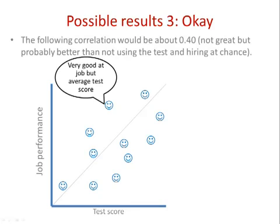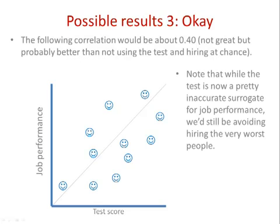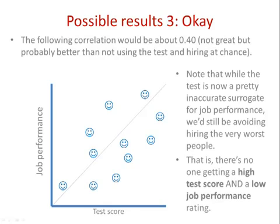There's a person here who actually turned out to be very good at the job but only got an average test score. But even with all of this noise, we're still avoiding hiring the very worst people. There's nobody in the top-left or bottom-right quadrants on the very edges, where someone gets a very high score but a low job performance rating — so we're still weeding out the really worst people.